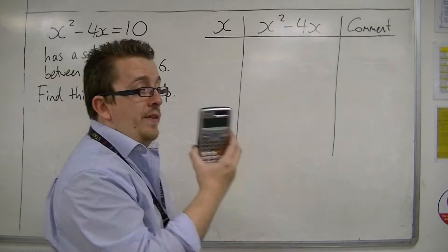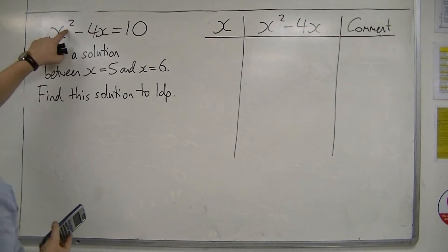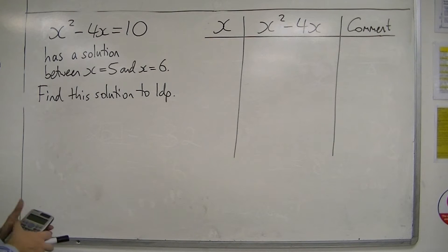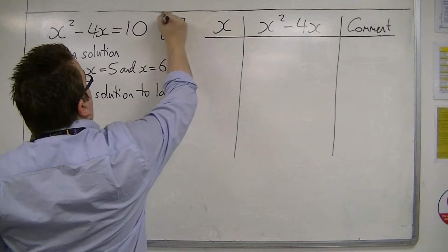Most of this is going to be done on a calculator. So we're going to need to know where the squared button is. On a Casio like this, the squared button looks like that, x squared.